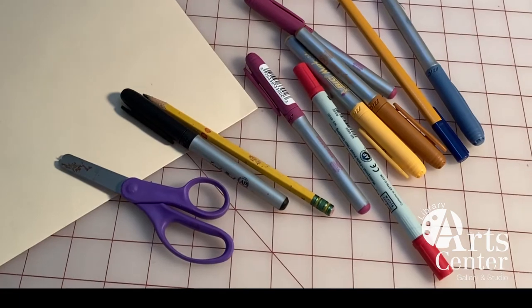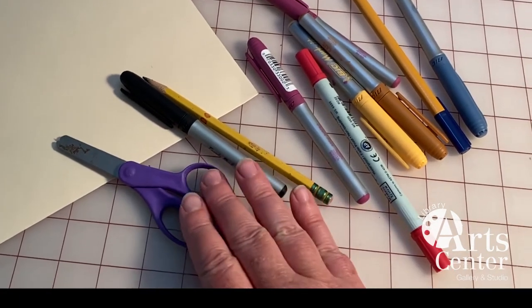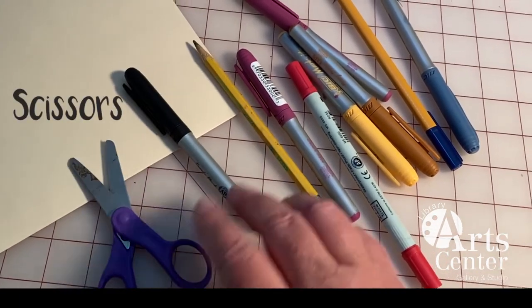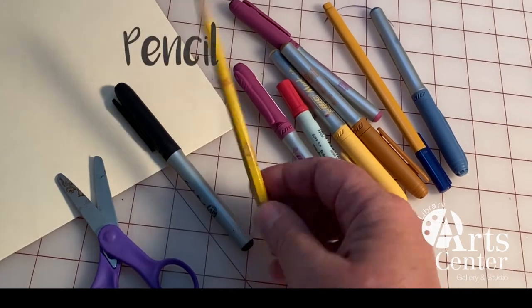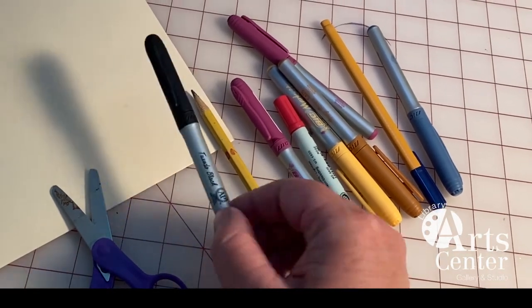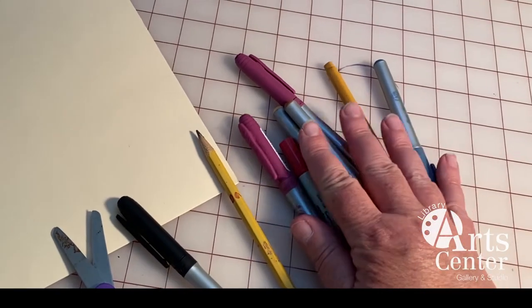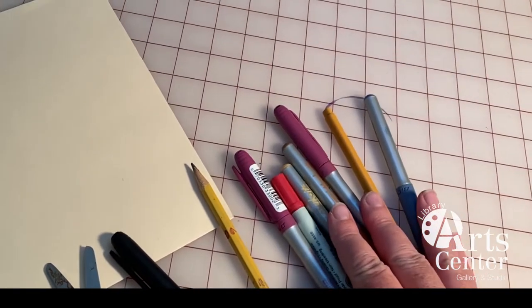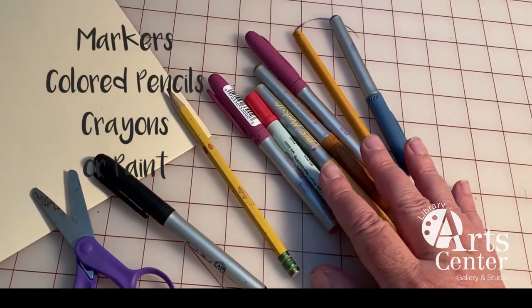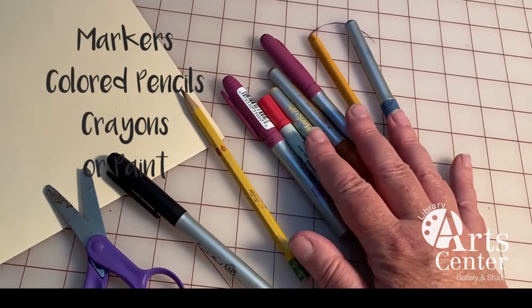The materials you need for this project are a pair of scissors, a pencil, I like to have a black marker for doing some outlining, something to color with. I have markers here, but you could also use colored pencils, crayons, or even paint.